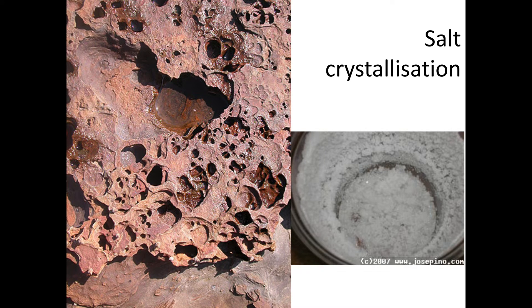Salt crystallisation — sometimes called honeycomb weathering — is more pertinent to a coastline. Salt water hits the cliff, then the sun evaporates the pure water and you're left with salt on the rock. As those salt crystals grow, they actually exert enough pressure to make the rock break apart. This is not a chemical reaction — it's the physical growth of salt crystals breaking rocks apart, so it's a physical form of weathering.